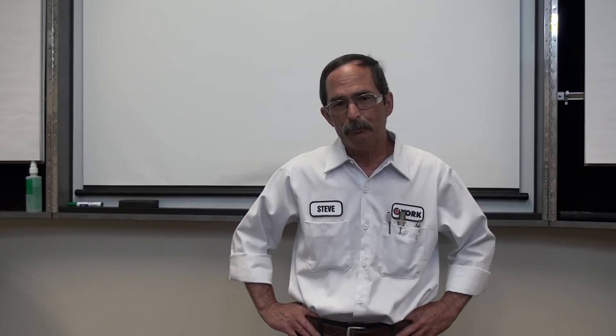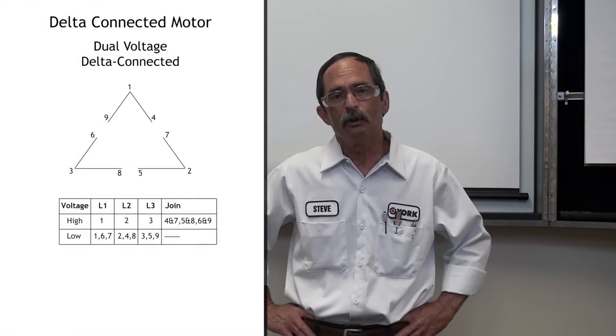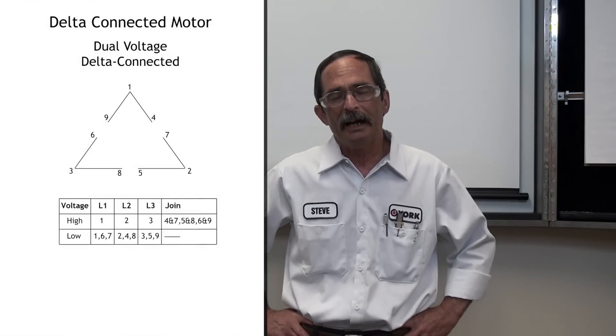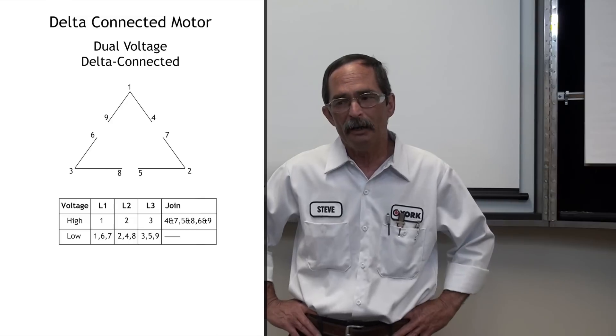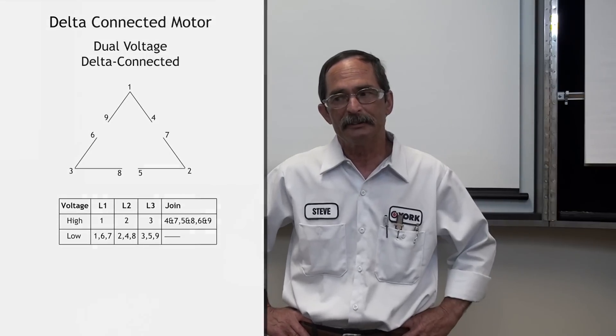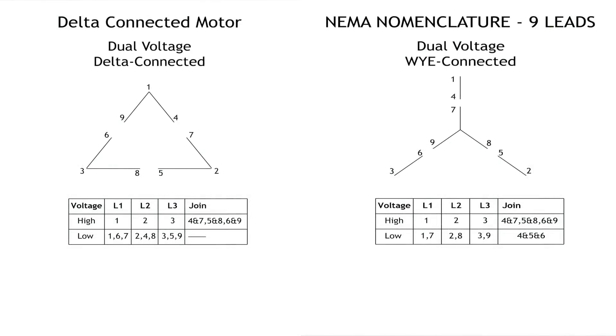If we end up with three combinations of three as we're checking continuity, then what we've got is a delta configuration, and that will change our high and low voltage connection. The high voltage connection, whether it's Y or delta, is going to be the same. The low voltage connection will definitely change. So we need to find out whether we have a Y or a delta configuration before we go ahead and wire it.